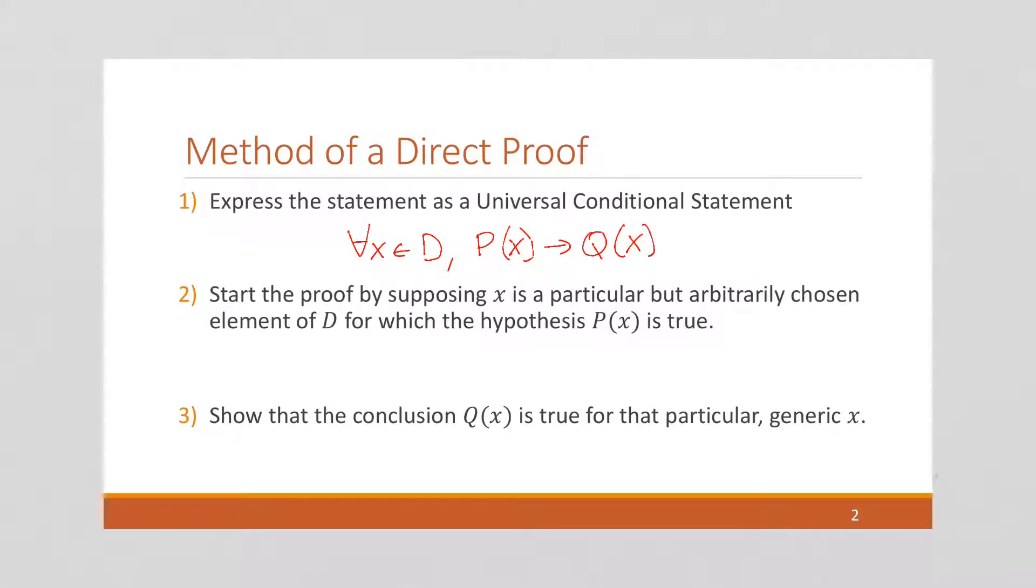Alright, so for all x in our domain, if p of x is true, then q of x is true. And then we want to take the first part of this, and we want to suppose that x is in our domain, and p of x is true. And then finally, we want to conclude or deduce that q of x is true.